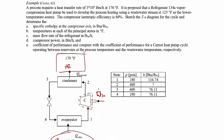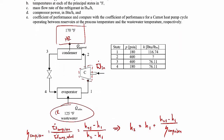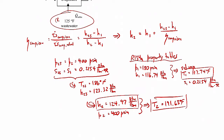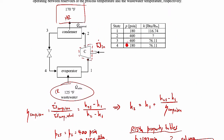Part B is finding the temperatures at each of the principal states in degrees Fahrenheit. We've already done state 1 and state 2. For the remaining states, these are lookups in the R134A property tables. T3 comes out to be 179.95 degrees Fahrenheit — a saturated liquid state — and T4 comes out to be 117.74 degrees Fahrenheit, which is a saturated vapor state.